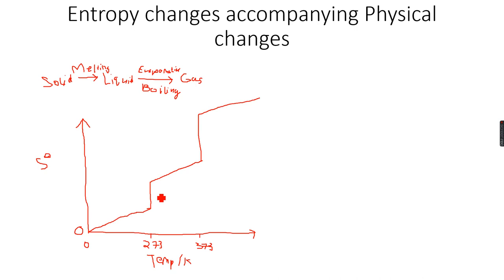But there will be a change of state. The temperature is not changing, but there will be a change of state. And the change of state will indicate that the entropy has drastically increased, because a liquid is much more disordered than a solid. So there will be a steep increase in the entropy. Then again, when I heat my liquid, the entropy will increase again, because the particles will start gaining energy and hence they will become more disordered. So the entropy will increase.